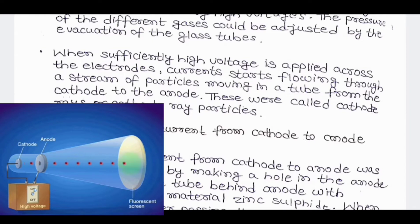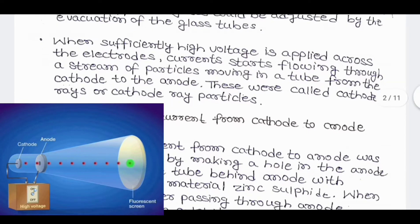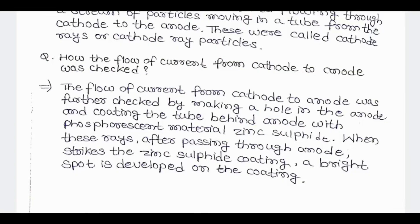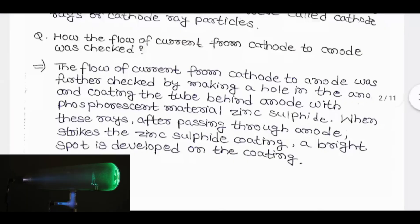These were called cathode rays or cathode ray particles. How the flow of current from cathode to anode was checked? The flow of current from cathode to anode was further checked by making a hole in the anode and coating the tube behind anode with phosphorescent material zinc sulfide. When these rays after passing through anode strike the zinc sulfide coating, a bright spot is developed on the coating.